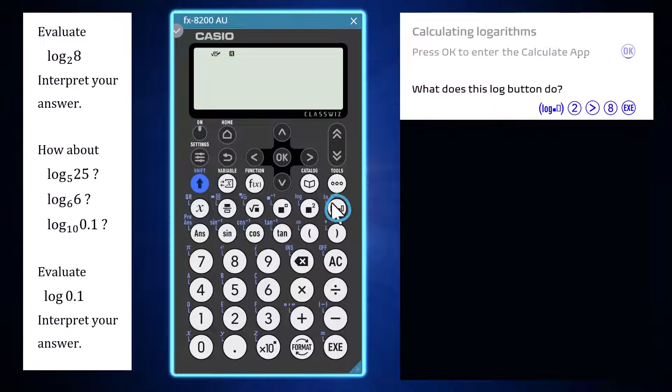Pressing the log button shows that a logarithm has two arguments, sometimes described as log base A of B. Enter the first of these arguments as 2, and then arrow right, enter 8 as the second argument, and press execute.